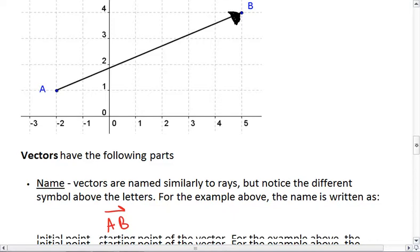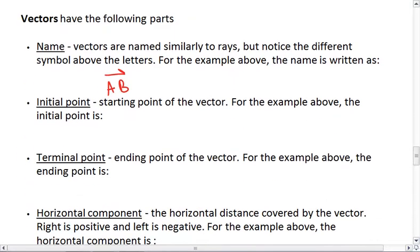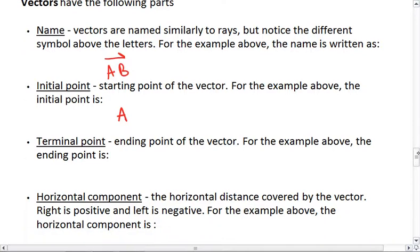So here we have vector AB. This vector has an initial point, which is the starting point, and that's point A. And this vector has a terminal point, or ending point, and that's point B.